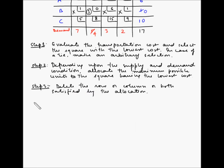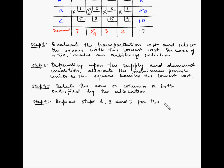Step 4 says that repeat steps 1, 2 and 3 for the reduced transportation table until all supply and demand conditions are satisfied.